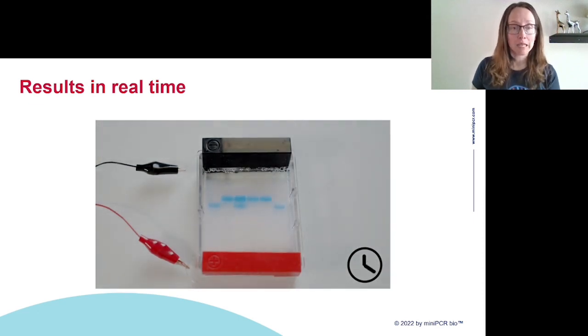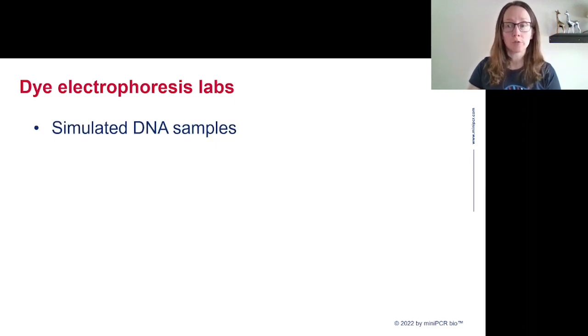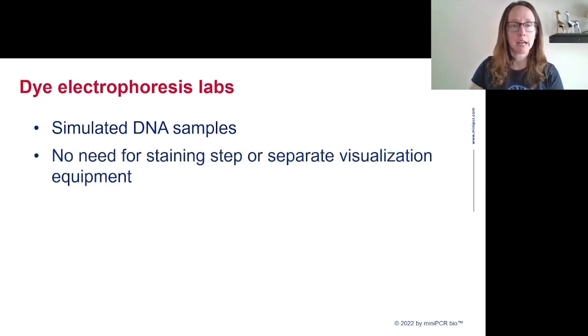We will check back in on this gel in a few minutes. But because you don't get to watch it running, here's a time-lapsed image showing what it looks like as the samples run out over 20 minutes. As you can see, the results are visible immediately. There's no need for a separate staining step or additional visualization equipment. What you load into Bandit is up to you. You can run DNA in a Bandit gel, but visualizing DNA with the system will require additional protocols to stain the DNA and additional equipment to view your samples with.